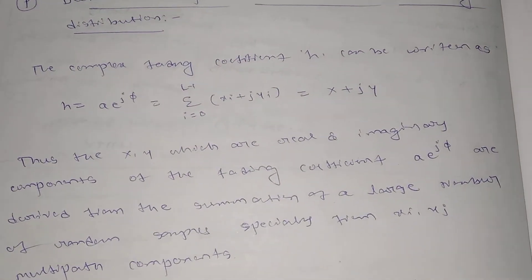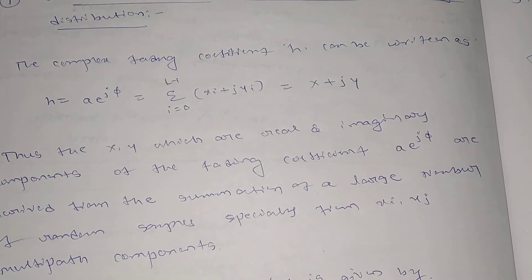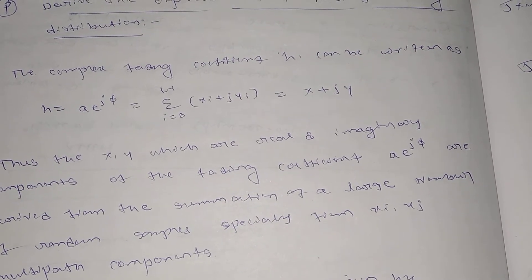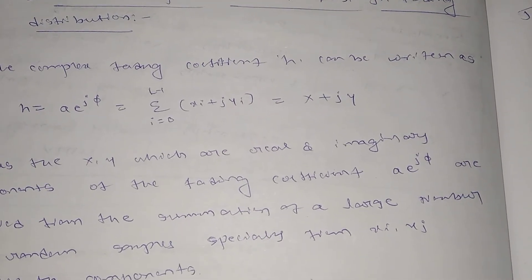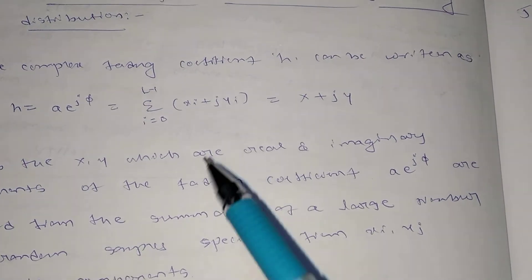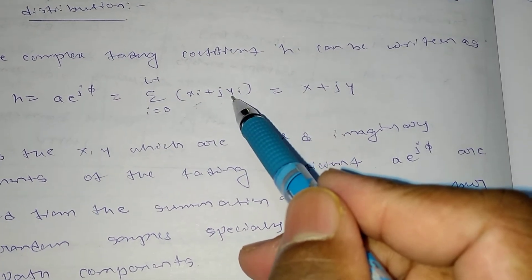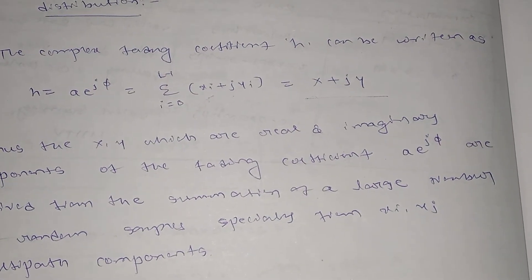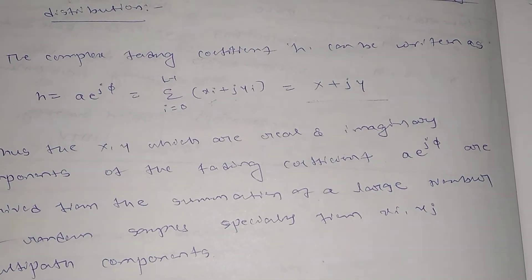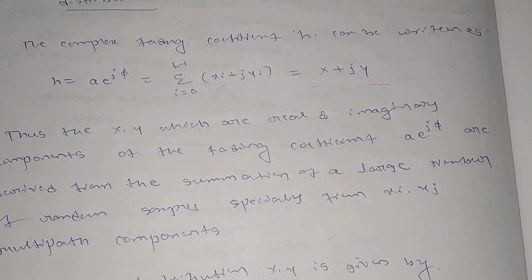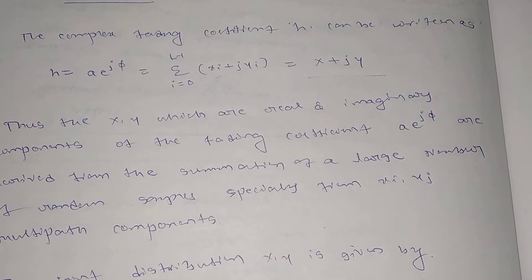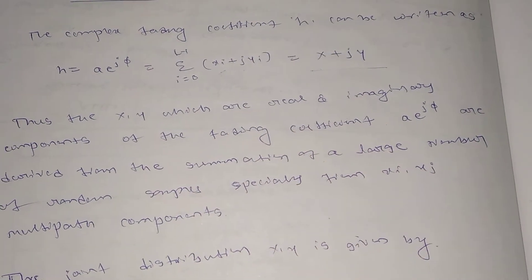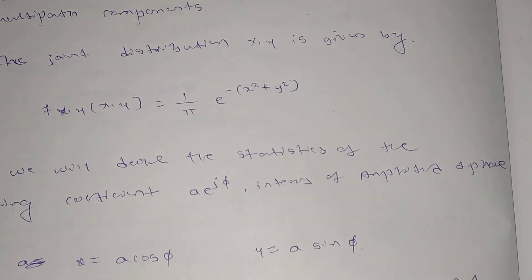With that said, I will start the derivation. Consider a complex fading coefficient h, which can be represented as h = a·e^(jφ), written for l minus one case, i equal to zero to l minus one. I will write it in terms of real and imaginary components: x_i is the real part and j·y_i is the imaginary part, represented in general form as x + jy. The components x and y are derived from the summation of a large number of random multi-path components.